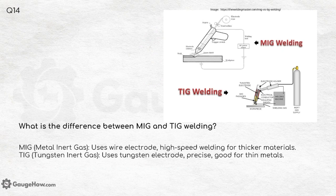What is the difference between MIG and TIG welding? MIG — Metal Inert Gas — welding uses a wire electrode for high-speed welding of thicker materials, while TIG — Tungsten Inert Gas — welding uses a tungsten electrode for precise welding, making it good for thin metals.